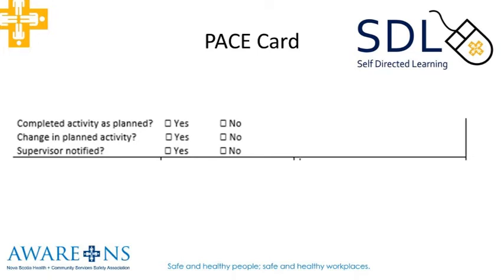The next section you fill out is: did you complete the activity as planned? In our scenario with the shower, if there are no obstacles, communication is good, and they're able to complete with minimum assistance, you would tick yes. If everything seemed fine except their mobility, then you may check the no box — we're not set up to give them a shower with the tools we have. When there's a significant change in the care plan, you're probably going to contact the supervisor and indicate whether you have or have not done so. That will depend on your own company or agency's understanding of when you need to report.